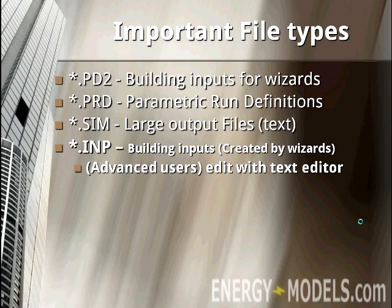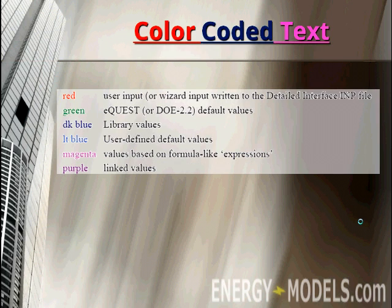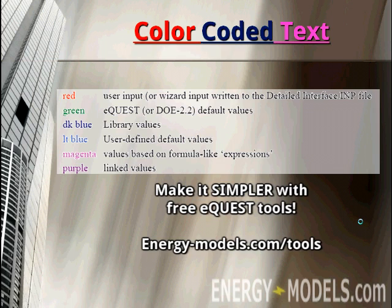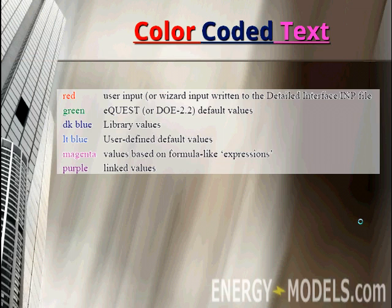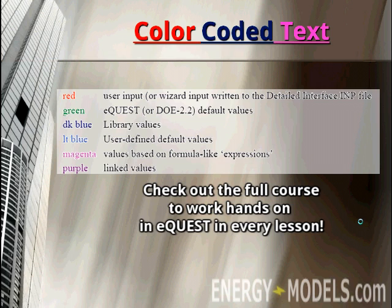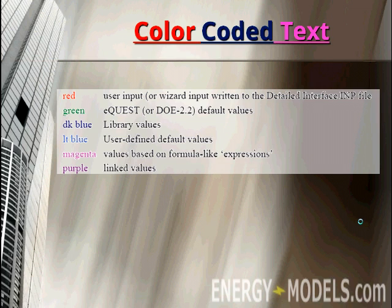While we haven't gotten into eQuest yet, before we open the program, it's important to note that the text is color coded. When you see text in multiple colors, you'll know what it means. Red text is indicative of anything that you have changed or, if you're opening someone else's file, that they have changed. Green text is indicative of the eQuest default values. Less common are dark blue and light blue for library values or user-defined default values. Magenta is for values based on formula-like expressions, which will be covered in a later lesson. And purple shows linked values, which will also be covered in another lesson.